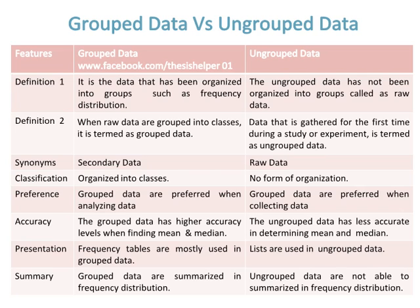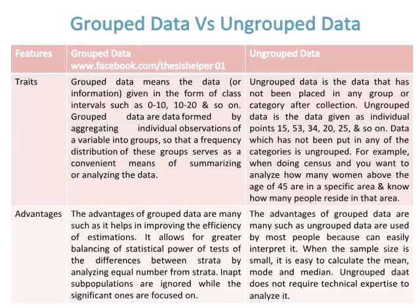Frequency tables are mostly used in grouped data, while lists are used in ungrouped data. Grouped data are summarized in frequency distributions, while ungrouped data cannot be summarized in a frequency distribution.